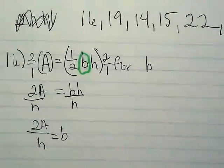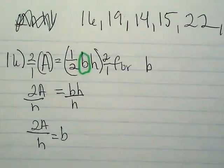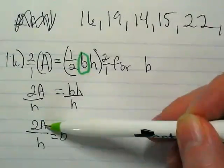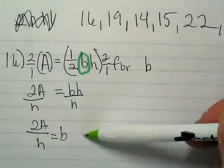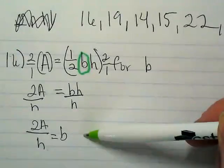So if I told you that I had a triangle with the area of 24, and a height of 9, you could put 2 times 24, divide it by 9, and tell me what the base is. Does that make sense?